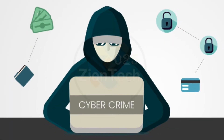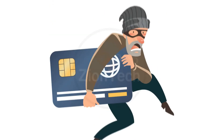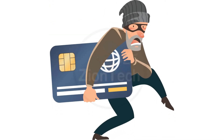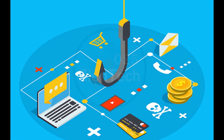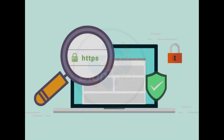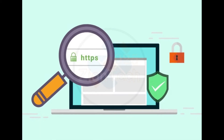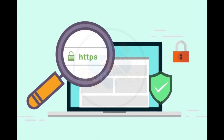Cybercriminals use this information to impersonate the victim, applying for credit cards, opening bank accounts, applying for loans, and committing other fraudulent activities. Criminals who use phishing tactics are successful because they carefully hide behind emails and websites that are familiar to the intended victim.